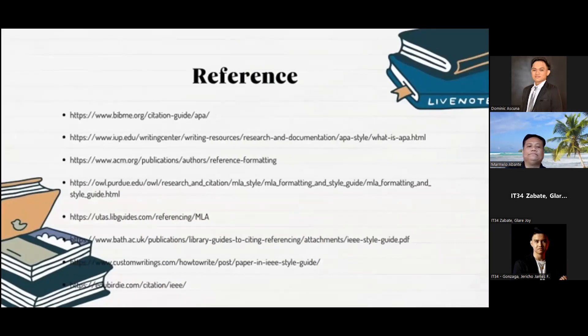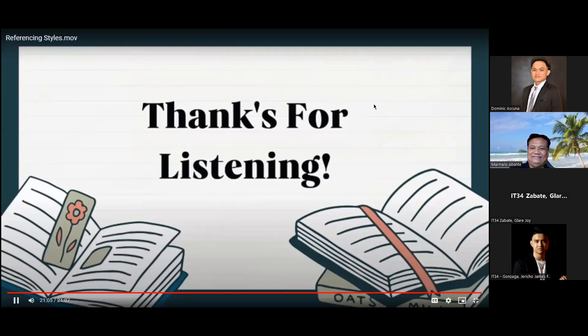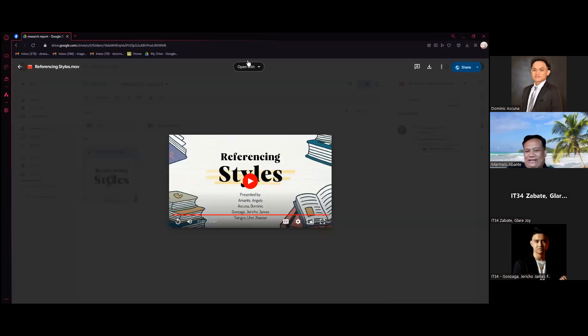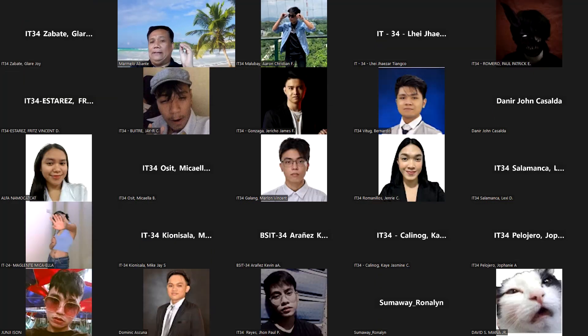That's all for our report. That will be the end of our report. Hope everyone learned something. Thank you for listening. Again, a referencing style is a standardized method for citing and acknowledging sources used in academic and scholarly writing. It provides a set of rules and guidelines to ensure consistency and traceability of information, allowing readers to locate and verify the sources referenced by an author.